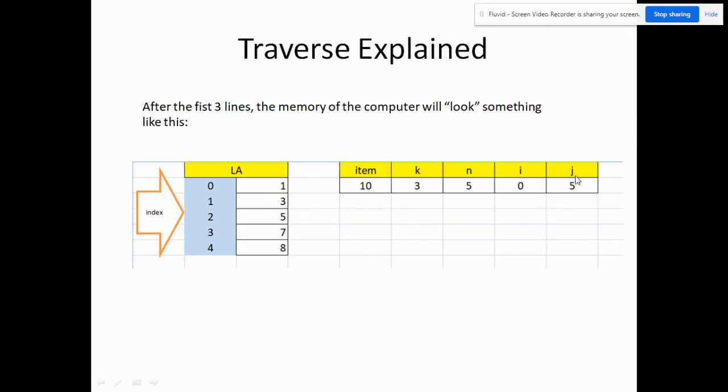Then we have declared several variables. We have item 10, which will be used in later examples. We have k equal to 3, also to be used in later examples. We have n equal to 5, the number of elements. Then we have two counters, i and j, with i initialized to zero and j initialized to the value of n, which is actually equal to 5.